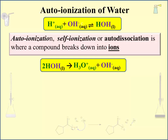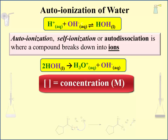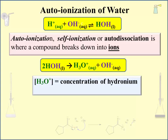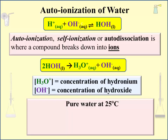To proceed, we need to introduce a new symbol: a pair of square brackets. When placed around a compound, it reads "concentration of that compound" — just a shorthand way of saying concentration. When placed around the hydronium ion, it reads concentration of hydronium. Placed around the hydroxide ion, it reads concentration of hydroxide. In pure water at 25 degrees Celsius, the concentration of hydronium times the concentration of hydroxide equals 1.0 × 10⁻¹⁴. That is a constant value given the designation Kw — the water ionization constant.